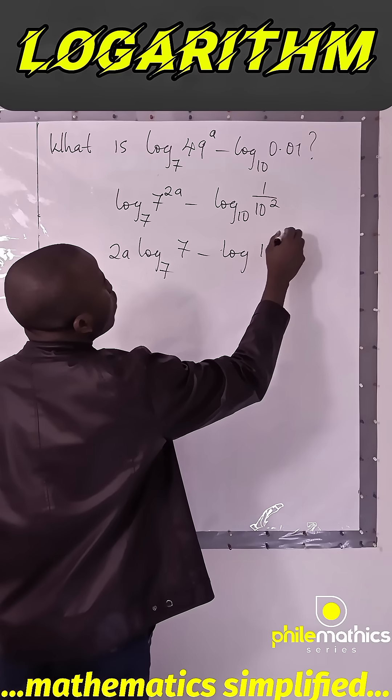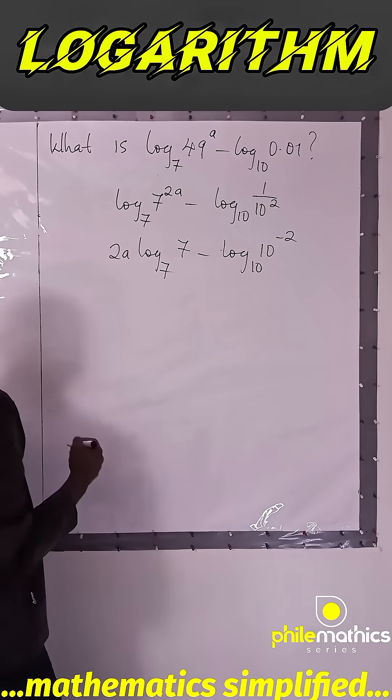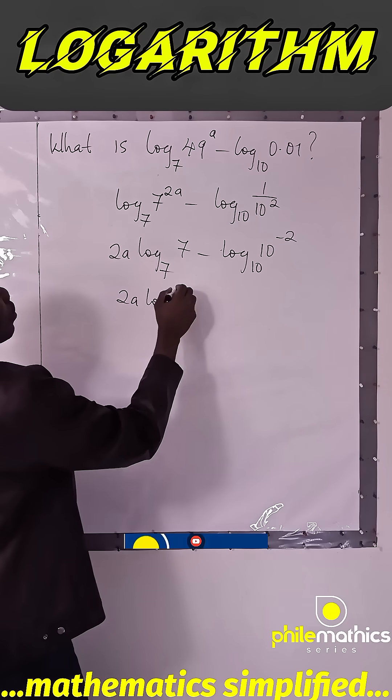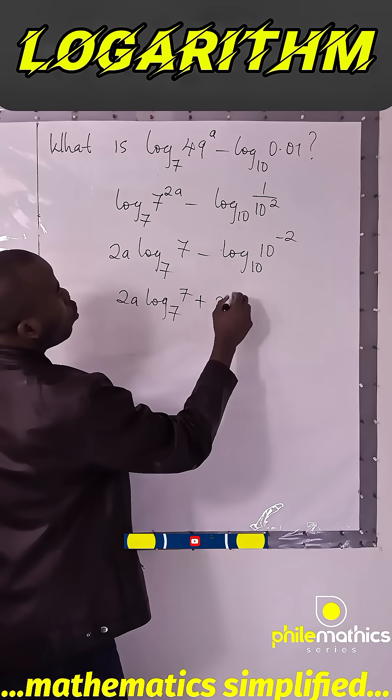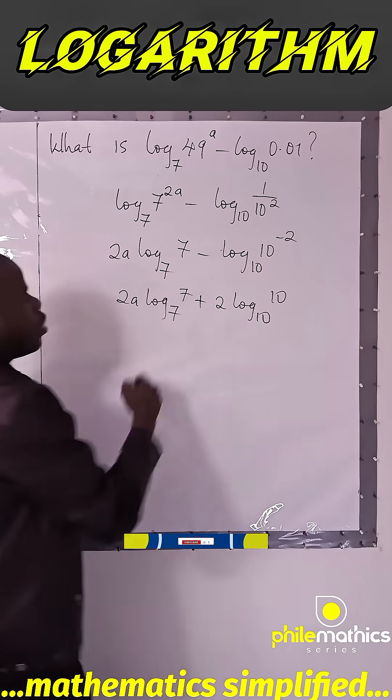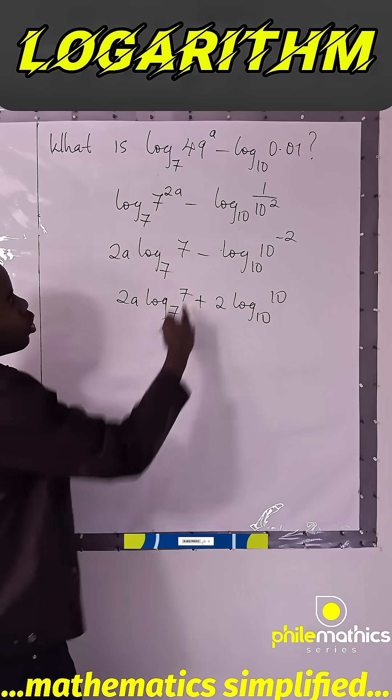And this is 10 to power minus 2 to base 10. So we have 2a log base 7 of 7, minus negative 2 log base 10 of 10.